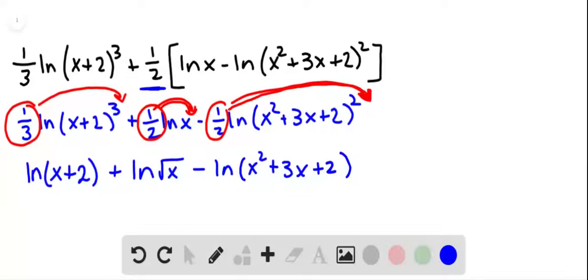Okay, so now what we want to do is use other properties of logarithms. And we have the product property, which tells us that if we have a log plus a log, we can combine those into the log of the product. So that would be the natural log of the product x plus 2 square root x.